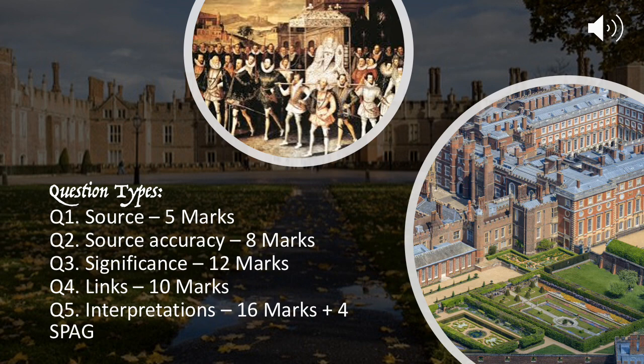As you can see, we have five questions on the Elizabethan paper. Question one, which we've already had a go at, will give you two sources and you have to write four sentences judging the source and what you can learn from it. Question two, which we're going to focus on today, is source accuracy, which is eight marks. Then we have a knowledge-based question on the significance of an event or a figure in Elizabethan history.